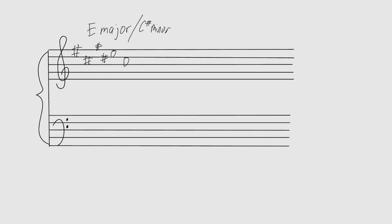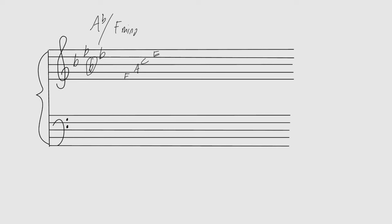Four sharps gives E major or C sharp minor. You can also count up to the sixth scale degree of E major to get C sharp minor — same rule as relative majors and minors in C. For flat key signatures, the rule is different: look at the second-to-last flat — that's your major key. With four flats (B, E, A, D), the second-to-last is A flat, so you're in A flat major. Find the sixth scale degree — or go down a minor third — and that gives you F minor. So four flats = A flat major or F minor.